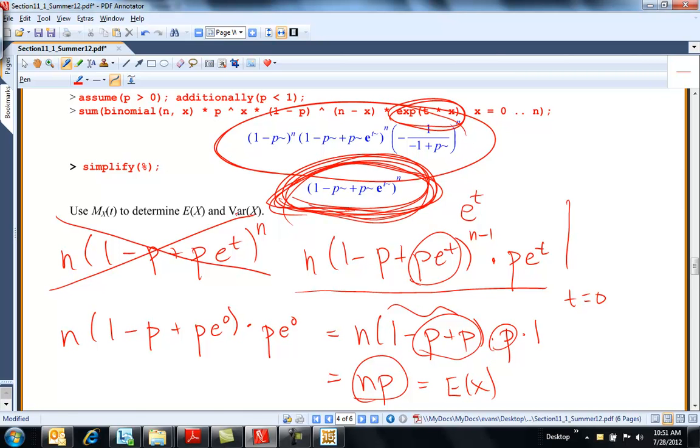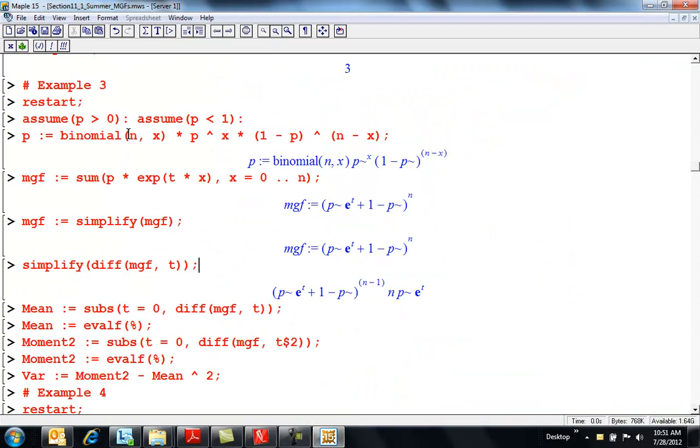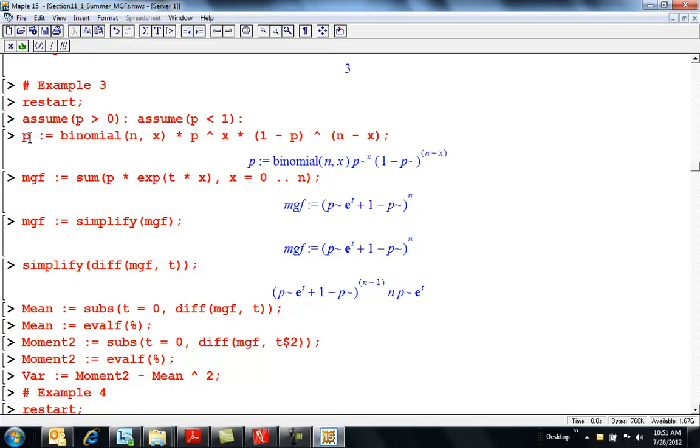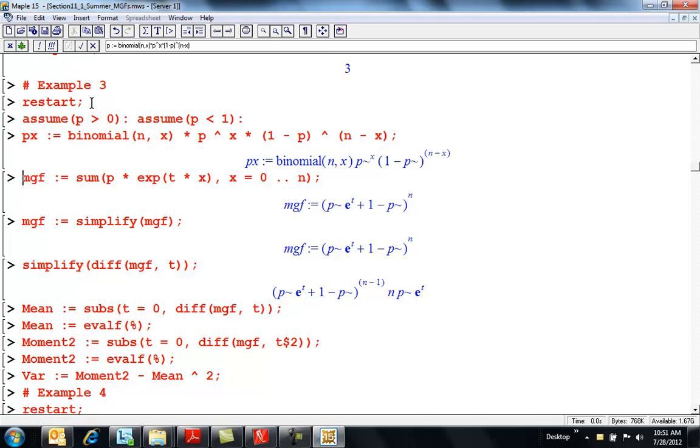To find the variance, I would take the second derivative to find the second moment. So I did this in Maple. Let's push a restart. There's the probability mass function. That's terrible because I have P in there twice. So let me rewrite this. The moment generating function is P of X times expected value of E to the TX over the support.